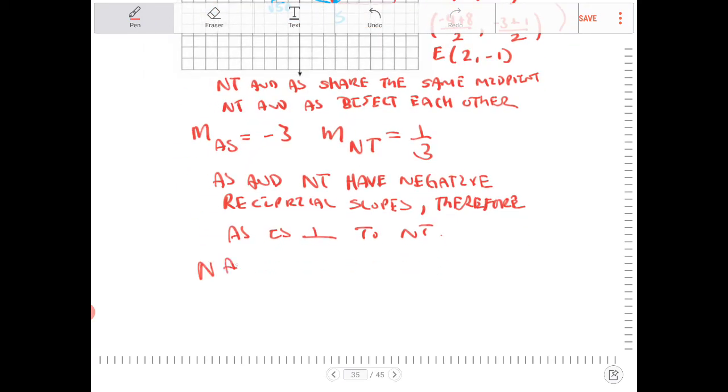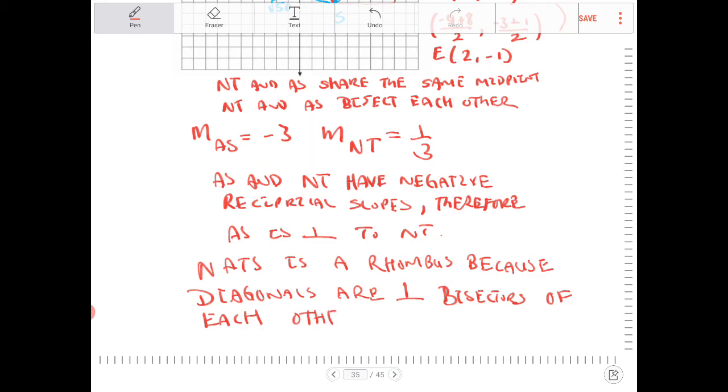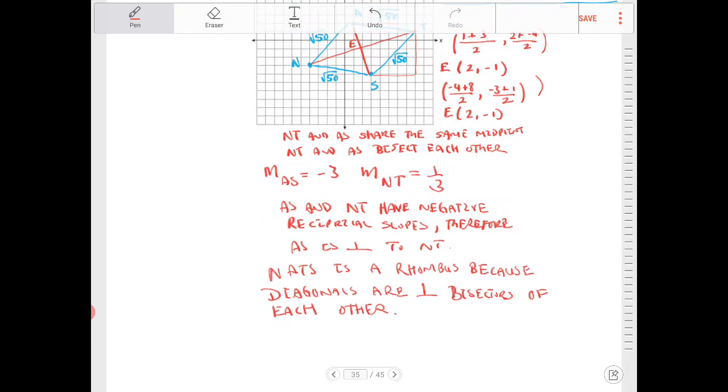N-A-T-S is a rhombus because diagonals are perpendicular bisectors of each other. There you go.